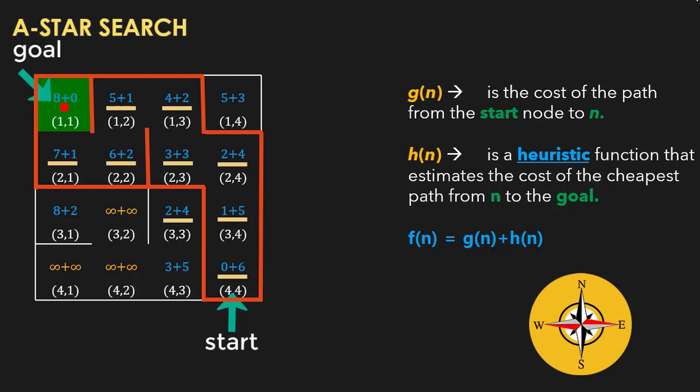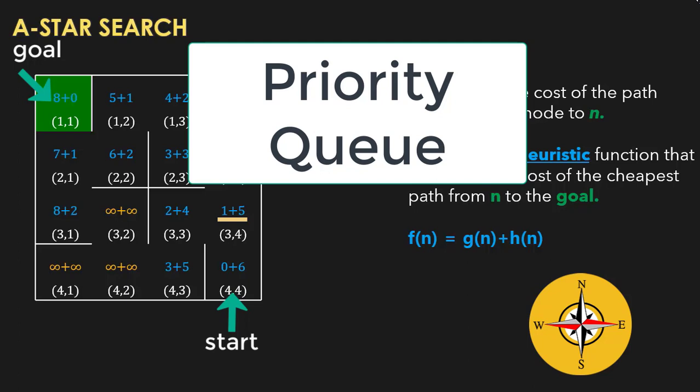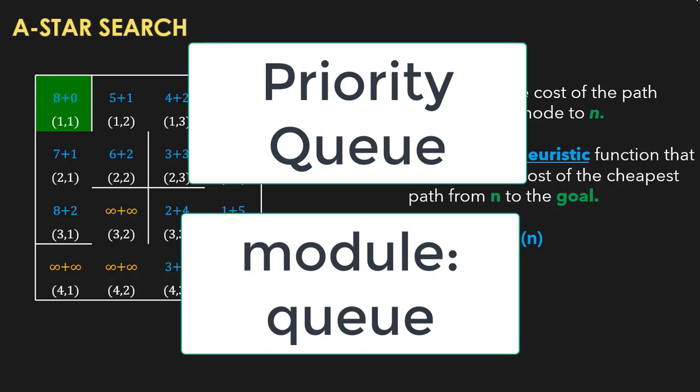Once the goal is reached, there is a way to reconstruct just the optimal shortest path. To implement this algorithm, we need a data structure known as a priority queue. A simple queue works on FIFO — first inserted item comes out first. In a priority queue, items come out based on priority, not insertion order. The item with the highest priority comes out first. In Python, the priority queue is available in the module 'queue', and priority is assigned to the item with the lowest value. In A star, we need to pick the cell with the lowest cost, so the priority queue is most suitable.